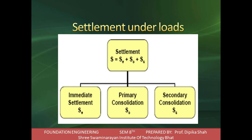In fine grain soil, primary consolidation occurs over a long time. On the other hand, in coarse grain soil, primary consolidation occurs rather quickly due to higher permeability - coarse grain soil has higher permeability so water escapes quickly. As water escapes from the soil, the applied pressure is gradually transferred from the water in the voids to the solid particles, so effective stress increases: σ' = σ - u.